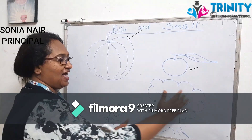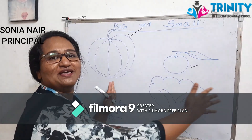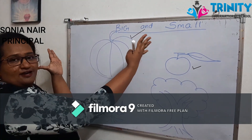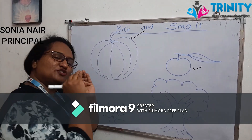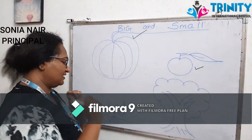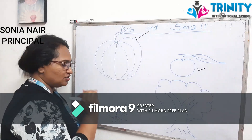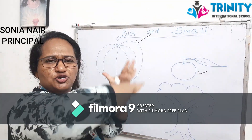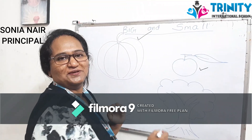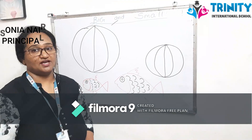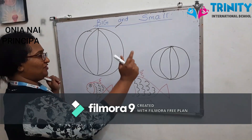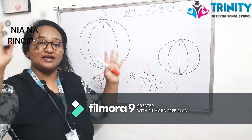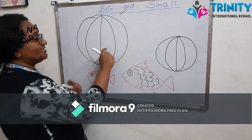This is small and this tree is big. Small and big. This is big, this is small. This is a small plant and this is a huge big tree.